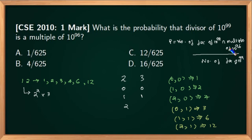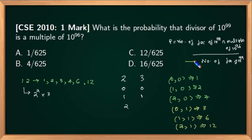In the numerator, you have to find the number of factors of 10 raised to 99 which are multiples of 10 raised to 96. So it must be a factor of 10 raised to 99, along with that it must be a multiple of 10 raised to 96 — that is what you require in the numerator. So your objective is to find the number of factors of 10 raised to 99, and the number of those factors which are multiples of 10 raised to 96.